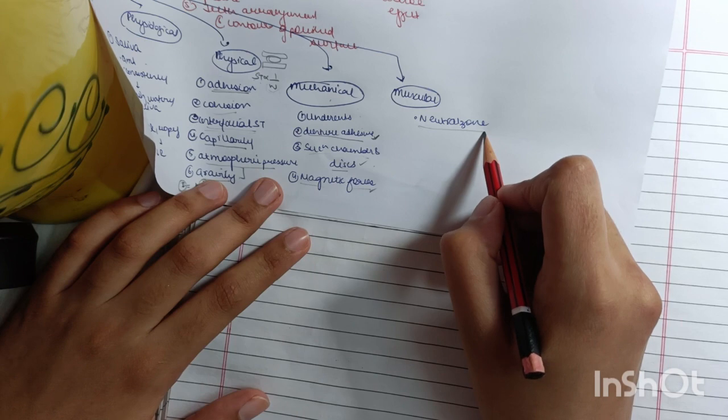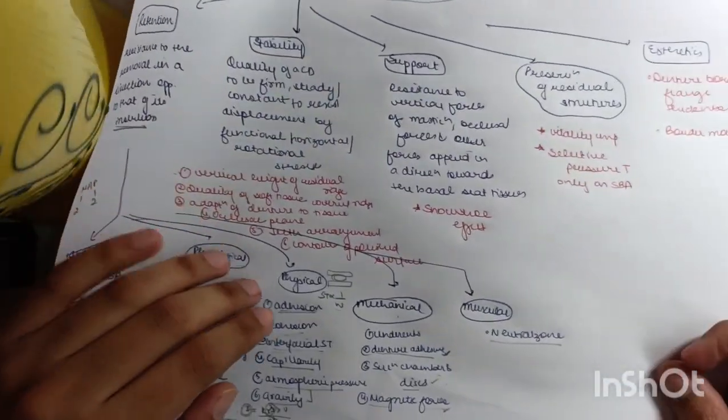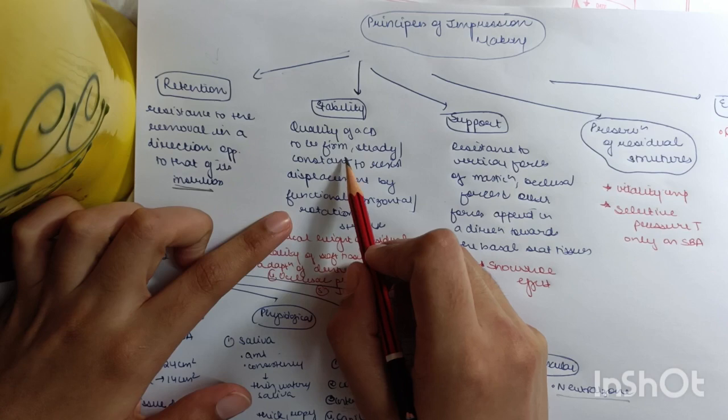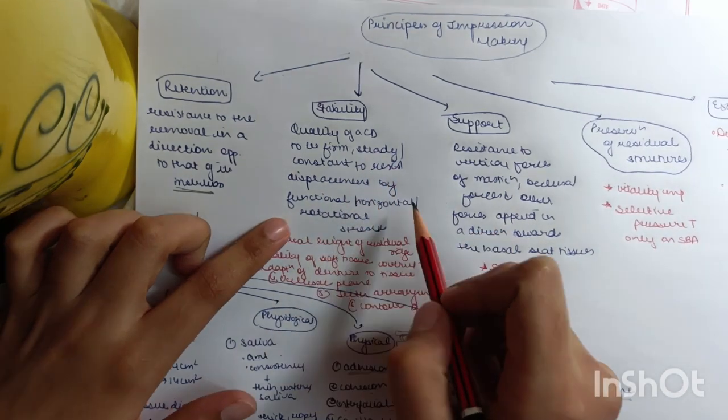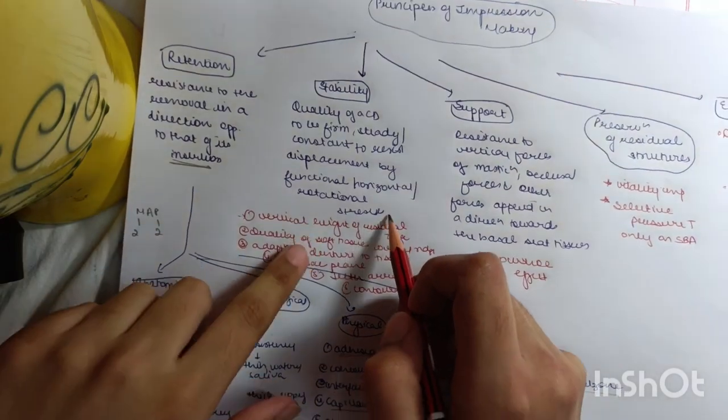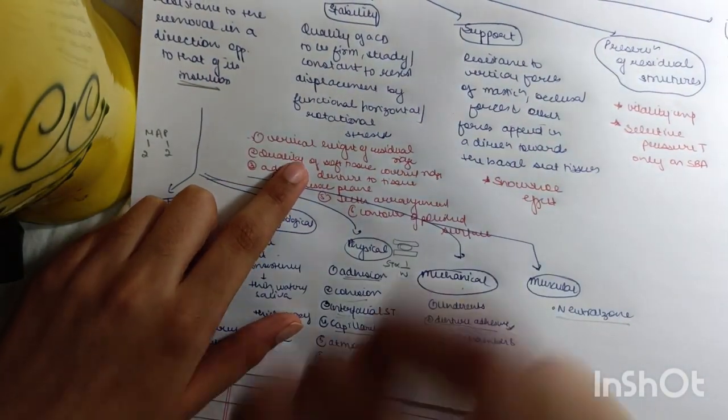Coming on to stability. Stability is the quality of the complete denture to be firm and steady and constant, to resist the displacement by functional horizontal rotational stresses. Vertical height of residual ridge, very important: if there is decreased vertical height of residual ridge it will lead to decrease in stability—directly proportional.